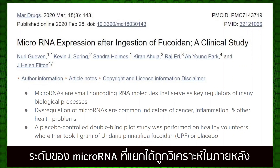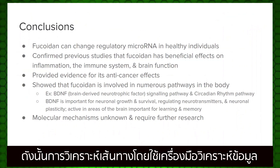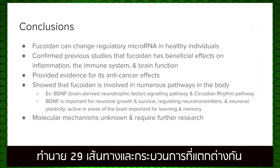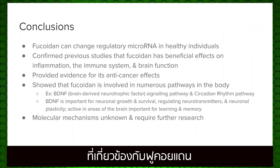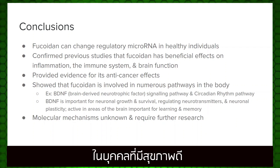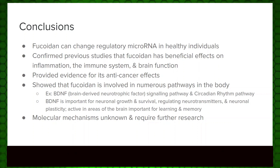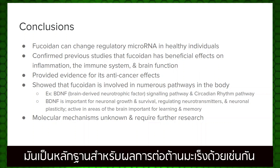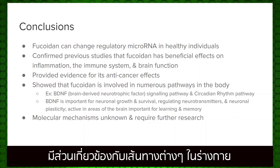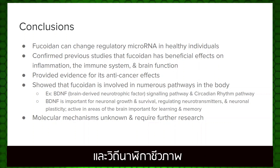The levels of isolated microRNAs were analyzed afterwards. Pathway analysis using a data analysis tool predicted 29 different pathways and processes associated with Fucoidan. Fucoidan was also able to change regulatory microRNA in healthy individuals, and it confirmed previous studies that Fucoidan has beneficial effects on inflammation, the immune system, and brain function. It also provided evidence for its anti-cancer effects, showing that Fucoidan is involved in numerous pathways in the body, for example in the BDNF signaling pathway and the circadian rhythm pathway.